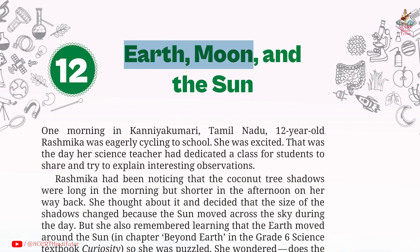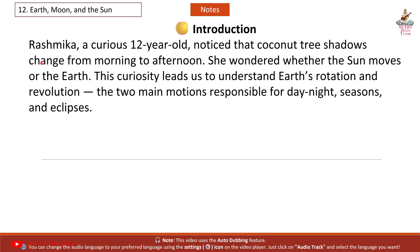Chapter 12: Earth, Moon and the Sun — Notes and Summary from Grade 7 Subject Science Book Curiosity. Introduction: Rashmika, a curious 12-year-old, noticed that coconut tree shadows changed from morning to afternoon. She wondered whether the sun moves or the earth. This curiosity led us to understand Earth's rotation and revolution, the two main motions responsible for day-night, seasons and eclipses.